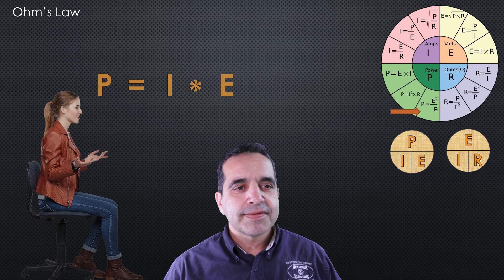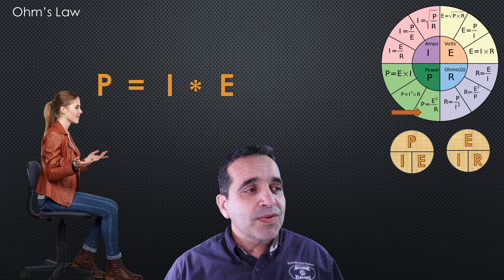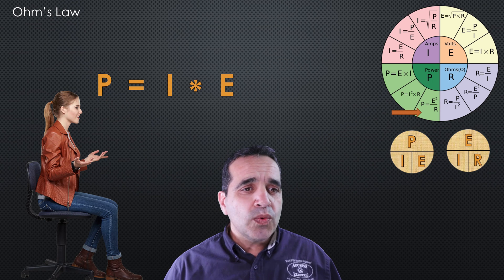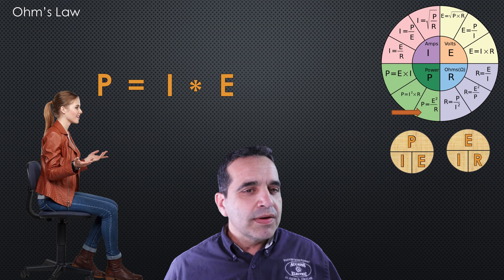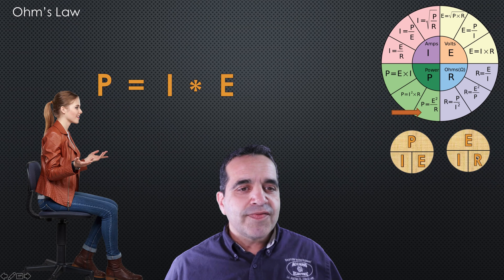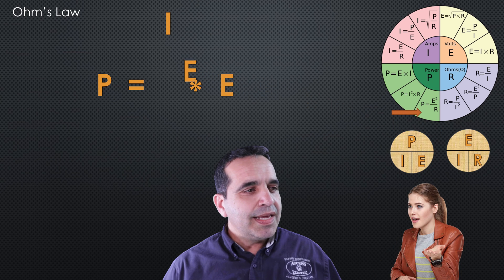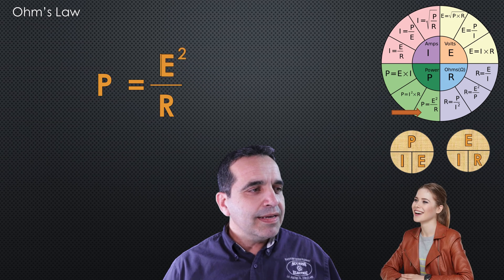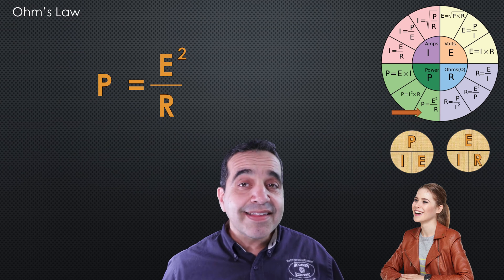Let's go to the next formula: P equals E squared over R. We begin again with P equals I times E. We want watts and we have voltage, but we have amperage that we don't need. There's a formula where I equals E divided by R, so we replace I with E over R. Squaring the E gives us E squared over R equals P. We've derived the second of our last six formulas.